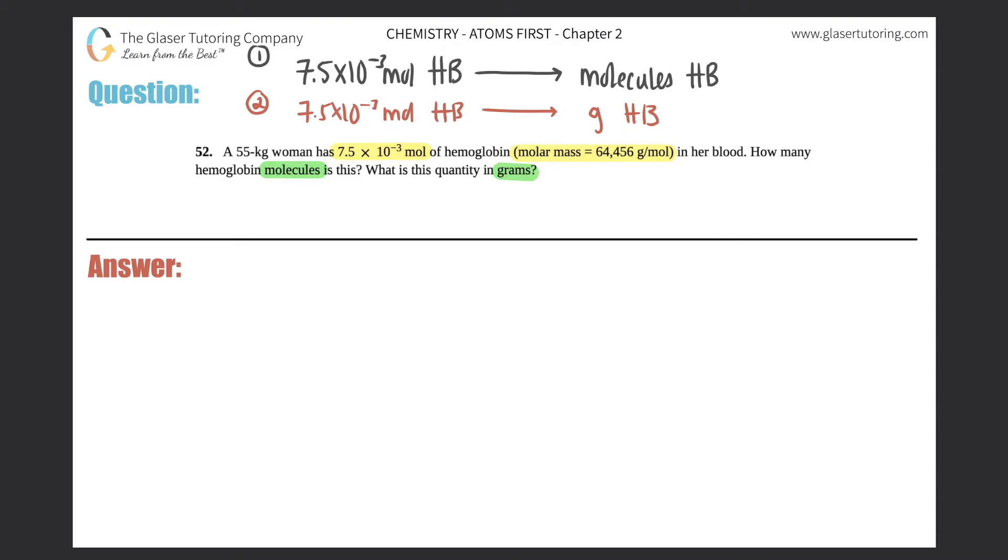So I'm just going to list this as question number one, going from moles of hemoglobin to molecules of hemoglobin. And then I'll split this down the middle. And then the second one is going from moles of hemoglobin to grams of hemoglobin. For the first one, can I go from moles to molecules in one shot? The answer is yes.